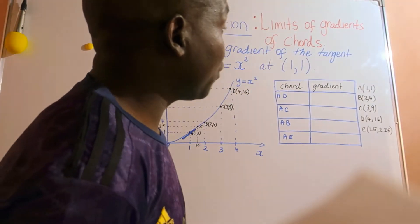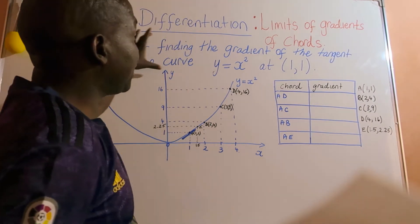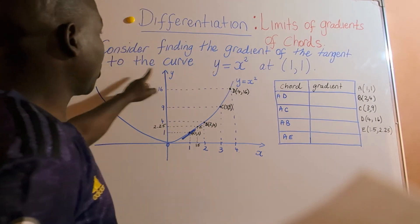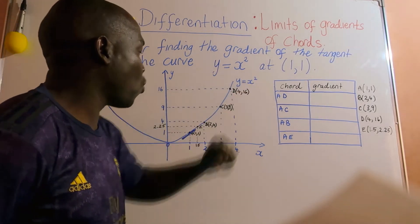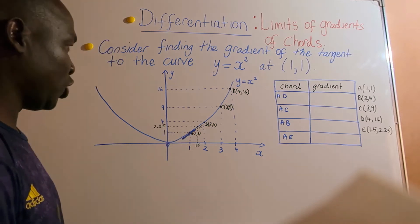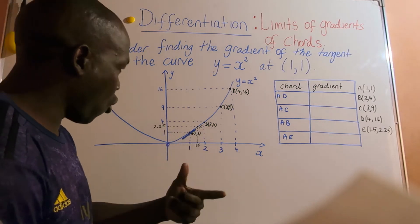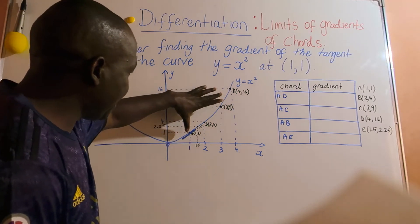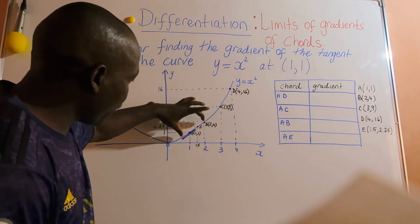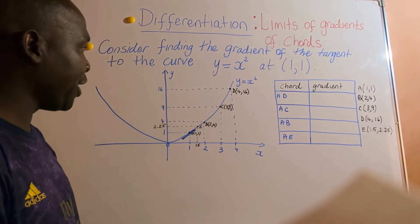Now only an informal understanding of the idea of a limit here is expected. So I'm going to demonstrate. We are going to consider the gradient of the tangent to the curve y equals x squared at (1,1). So this is my point (1,1). We want to find the gradient of this tangent, so we start by drawing a sequence of chords: the chord AD, the chord AC, the chord AB, the chord AE, coming closer to our point A.